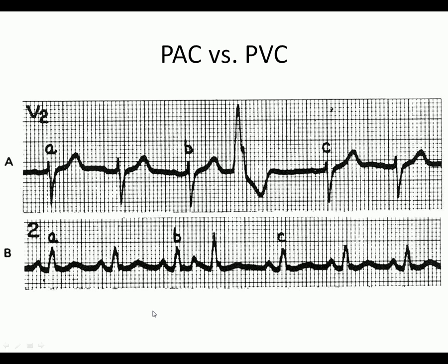Let's look at some EKGs. This first slide differentiates between a PVC — premature ventricular contraction — and a PAC — premature atrial contraction. Line A demonstrates PVCs and line B demonstrates PACs. That big blob here is clearly not like anything else on the strip — that's a PVC. Down here on line B we have our P wave, QRS, T, then another P, QRS, T, and then a P wave probably inside the T wave which causes a QRS to fire early.